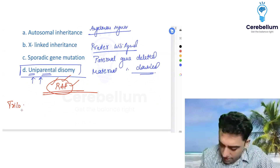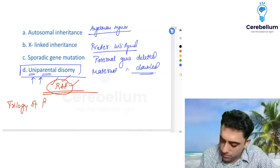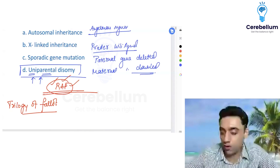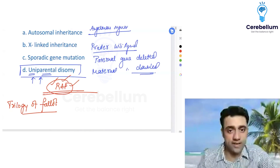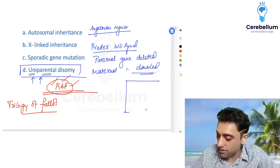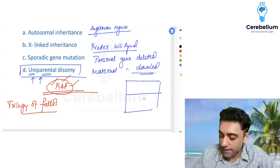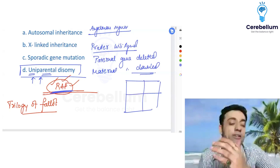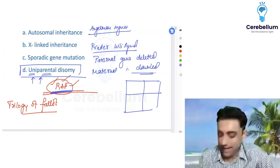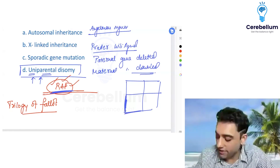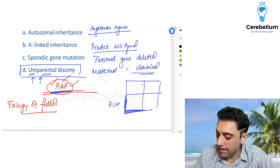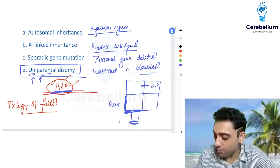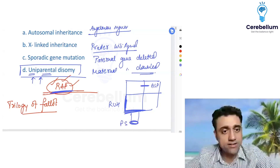Next: Trilogy of Fallot. Tetralogy of Fallot has a boot-shaped heart. Trilogy of Fallot — 'tri' means three — also uses the mnemonic RAP: R for right ventricular hypertrophy, A for atrial septal defect, and P for pulmonary stenosis.